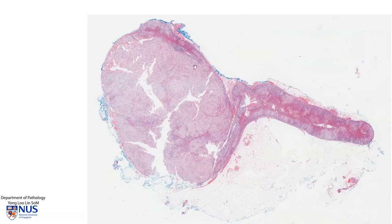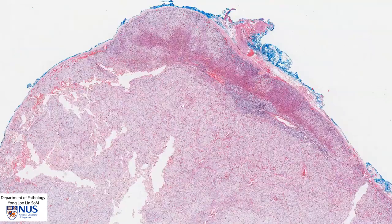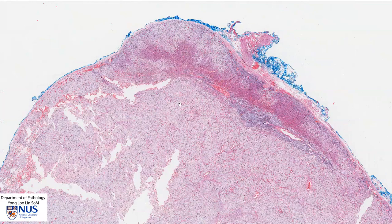In summary, we have a well-circumscribed ovoid tumour mass arising in the adrenal cortex, composed of nests of large polygonal cells with abundant clear cytoplasm resembling the cells of the zona fasciculata. There are no significant atypical features in terms of invasive growth, raised mitosis, nuclear pleomorphism, or necrosis. Therefore, the diagnosis is adrenocortical adenoma.